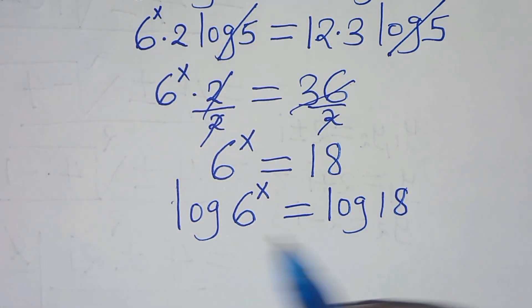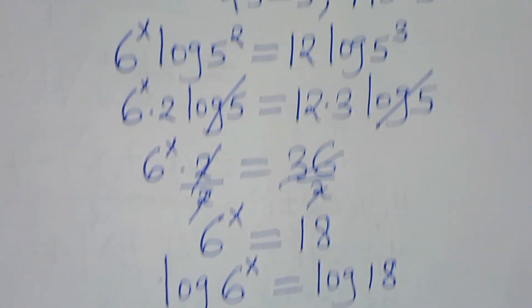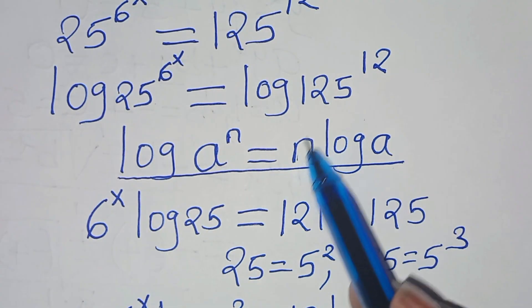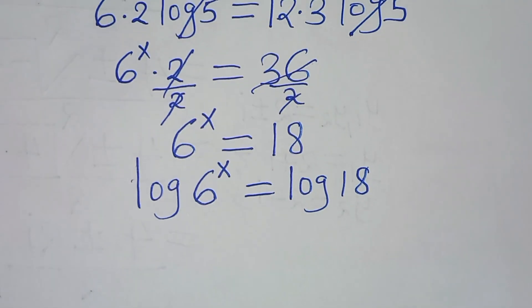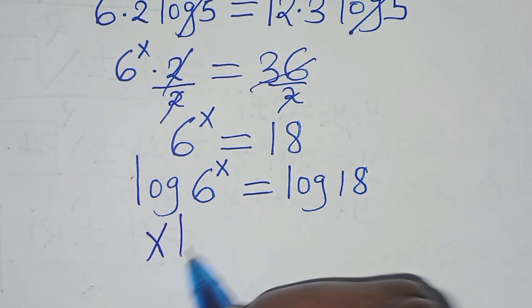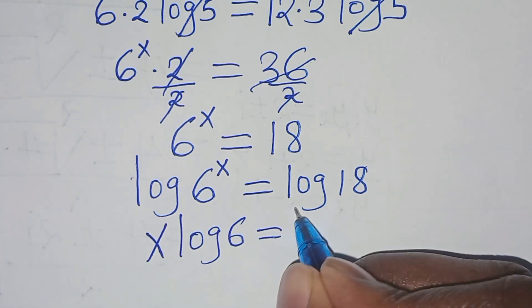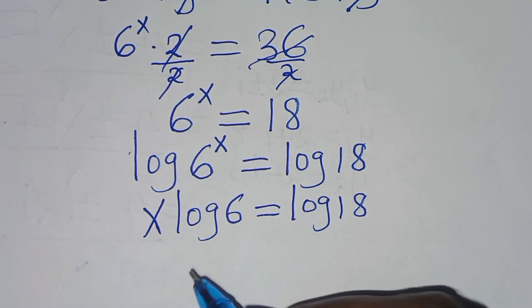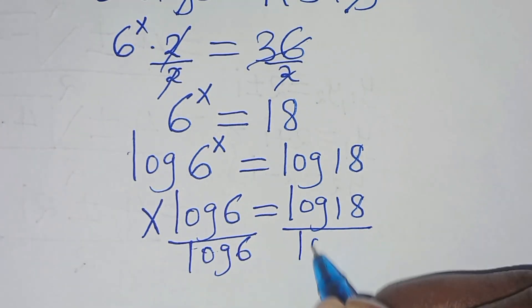Now, log 6 to the power of x is in the form of log a to the power of n, which can be expressed as n log a. Applying this property, log 6 to the power of x becomes x log 6, and this is equal to log 18. So let's divide both sides by log 6, and simplifying log 6 and log 6, we have x is equal to log 18 over log 6.